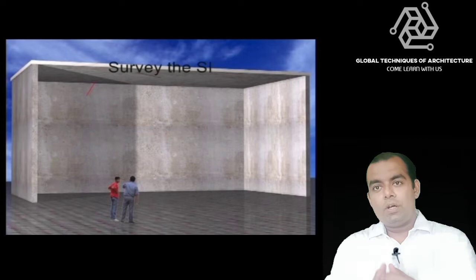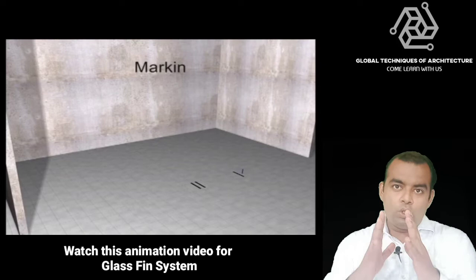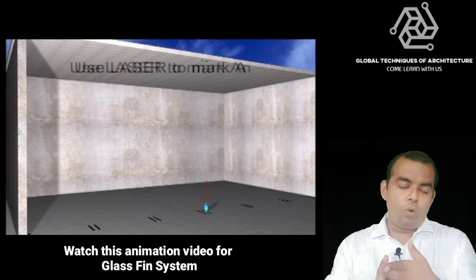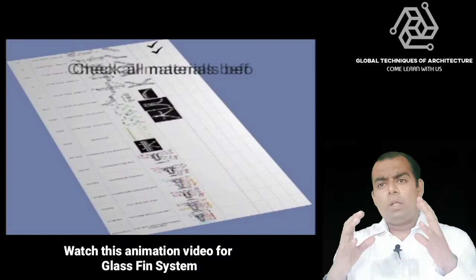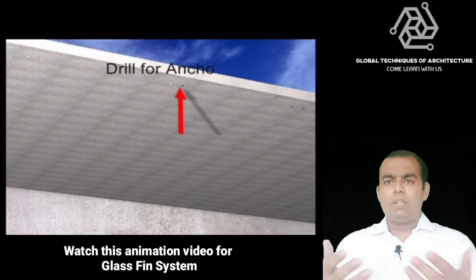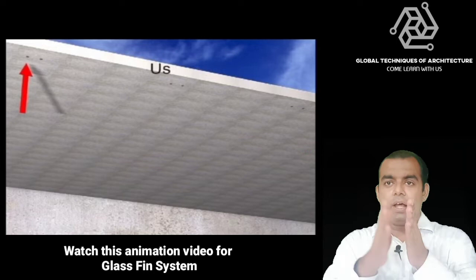Hello and welcome to a brand new chapter of global techniques of architecture. Today's video is about spider glazing, which is a very common sort of glazing visible in every aspect of our daily routine — whether visiting a mall, going to an office, or going to a showroom. The central idea of spider glazing is basically suspended glazing — any facade where the glass is suspended from the top is considered spider glazing.